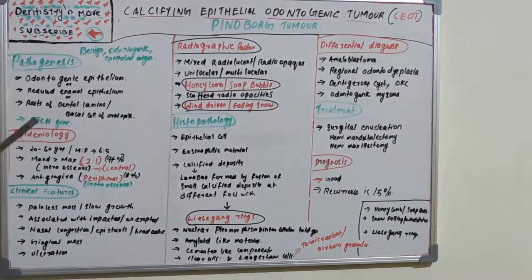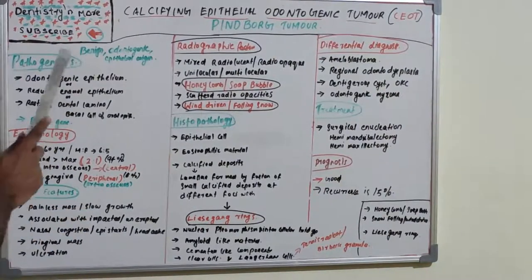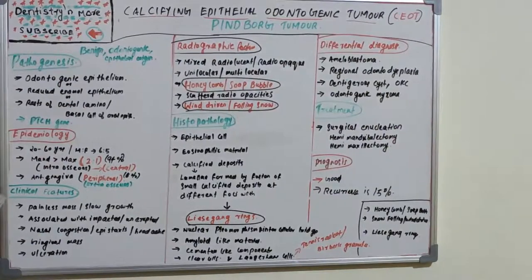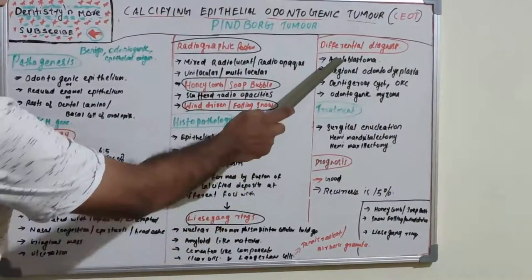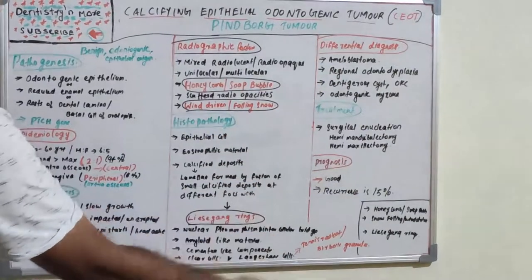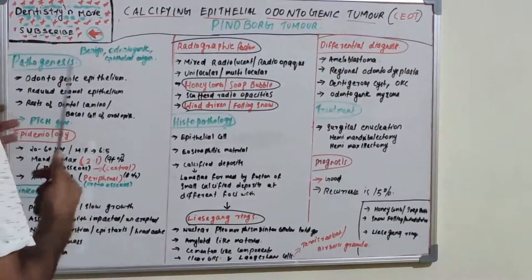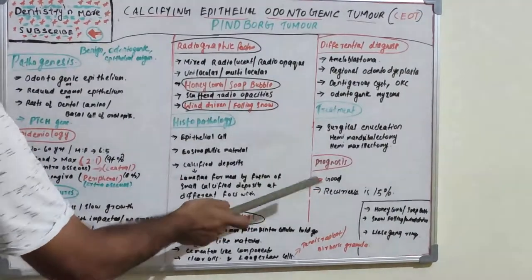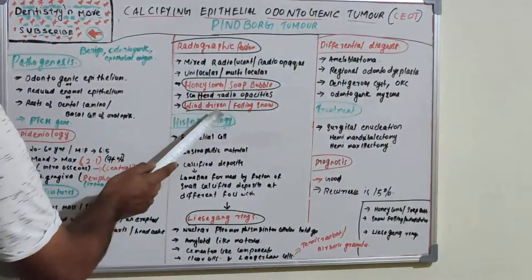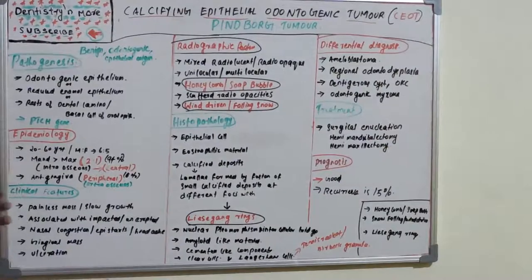When writing about a tumor, use these subheadings: introduction, pathogenesis, epidemiology, clinical features, radiographic features, histopathology, differential diagnosis, treatment, and prognosis. Always highlight the striking features like honeycomb, wind-driven or snow-falling, and Liesegang rings. I'll come up with a new tumor in my next session. Thank you.